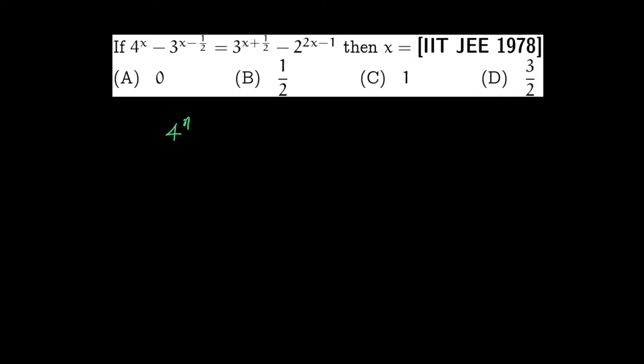4 raise to x minus 3 raise to x minus half is equal to 3 raise to x plus half minus 2 raise to 2x minus 1.